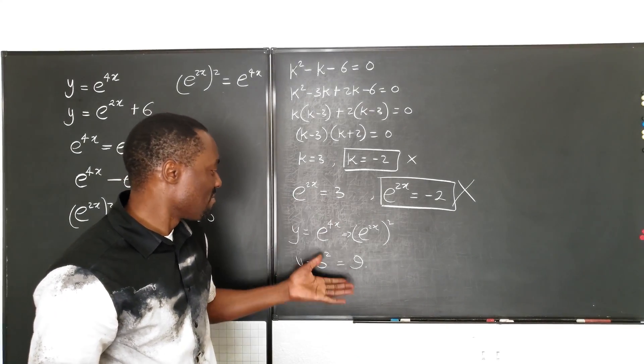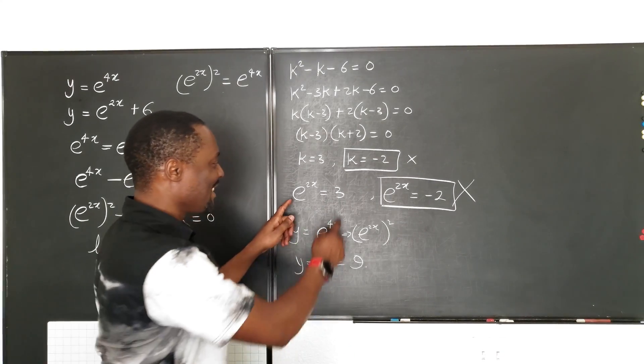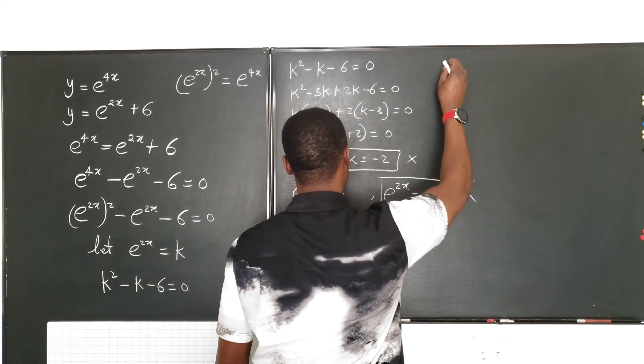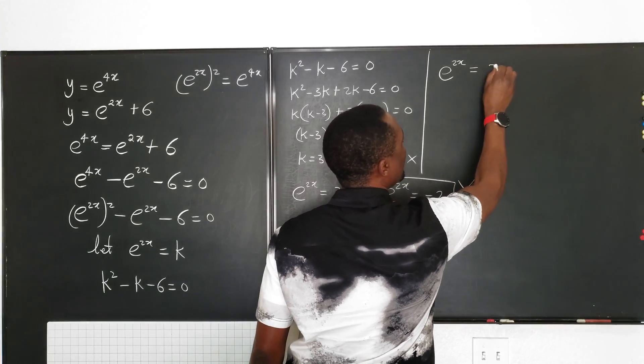So what exactly is x? Well, we can actually solve for x, but why don't we just use this expression? So what we have is e to the 2x is equal to 3.